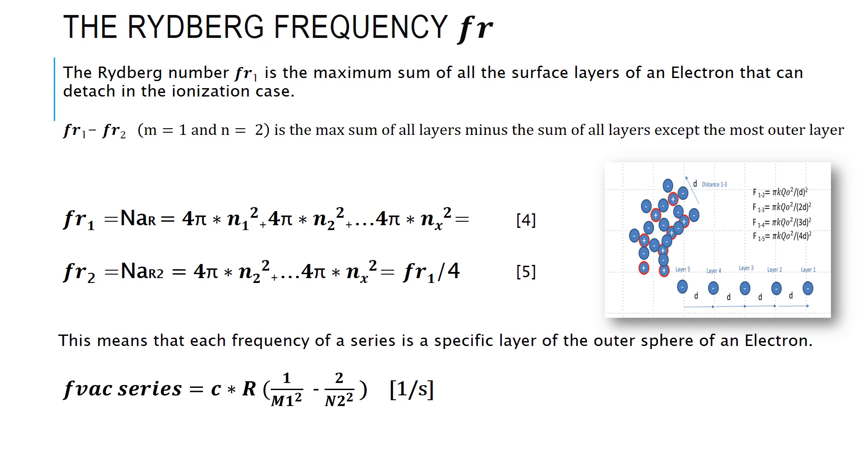And so, the Rydberg formula, all it is, is really you have a number of layers minus a number of other layers that are the number of layers that fly off as this second electromagnetic wave. If you spend a little time on the formula, you will understand very easily how the Rydberg formula is nothing more than the subtraction of two sets of layers of the electron.